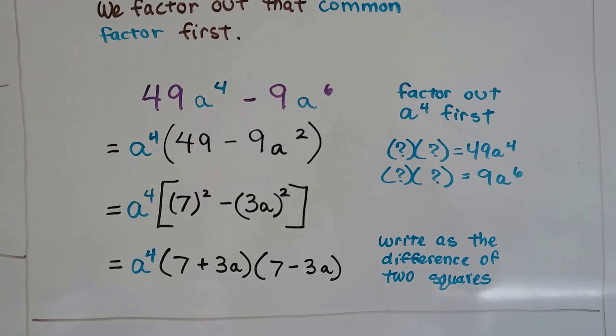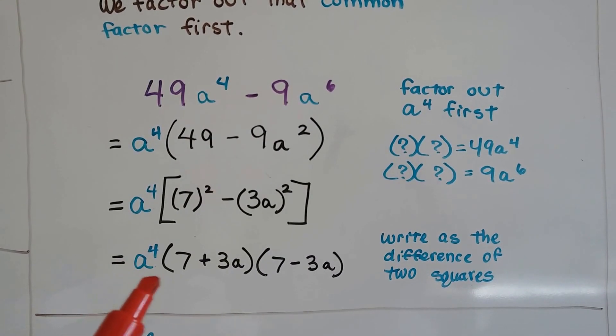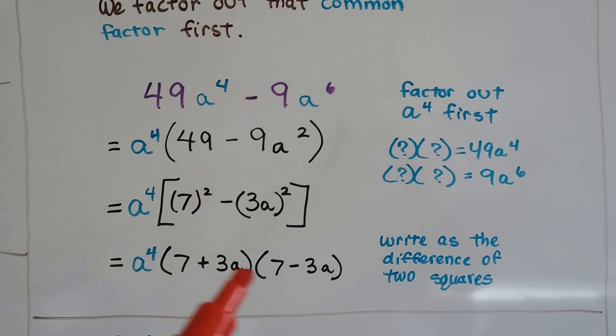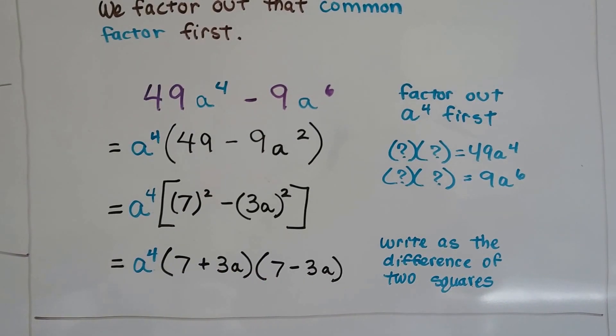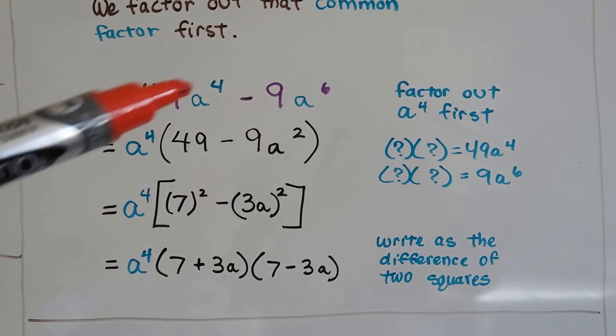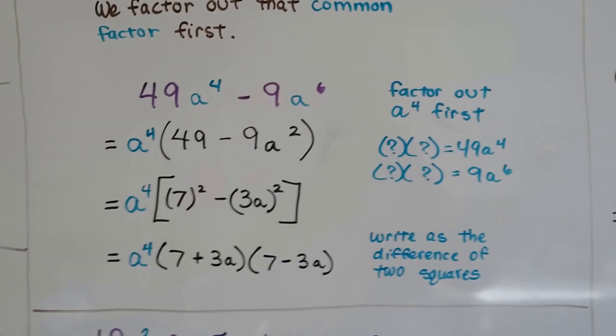And we can write as the difference of two squares. We'd have a^4(7+3a)(7-3a). We just factored out that a^4 first because they both had an a there.